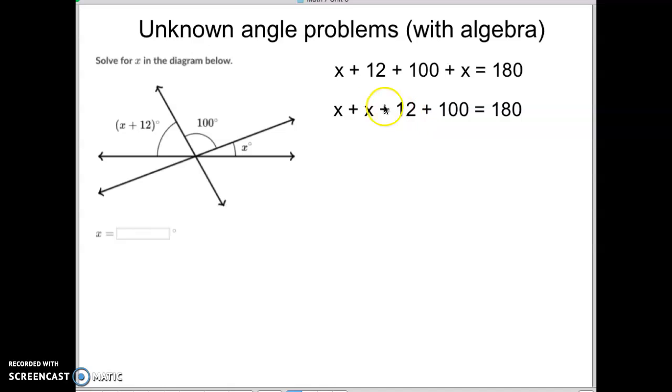So this step you don't have to do, but I just rewrote it so the two x's are next to each other and then the two numbers are next to each other. And x plus x would be 2x. 12 plus 100 would be 112 and that equals 180.